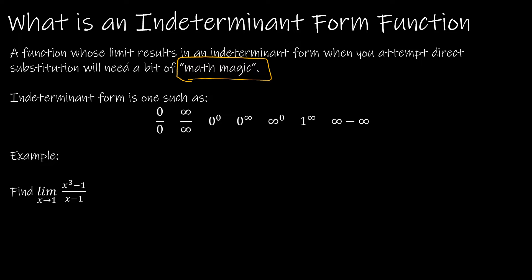For instance, we have the limit as x approaches 1 of x cubed minus 1 over x minus 1. If I do direct substitution, I get 1 minus 1 over 1 minus 1, which is 0 over 0. You might be tempted to say the limit does not exist, but that is absolutely not true — it just means we have to work a little harder.